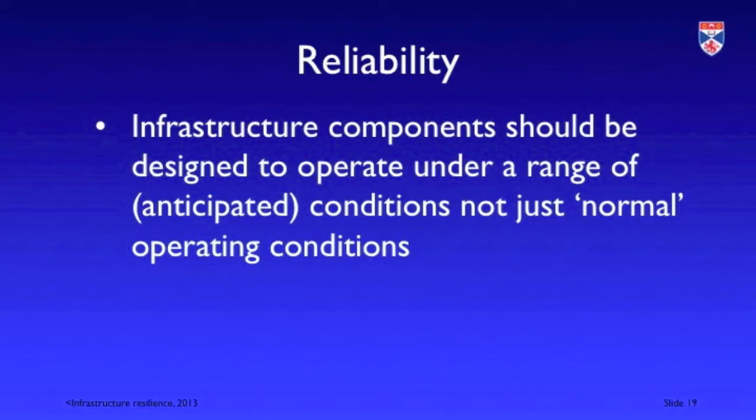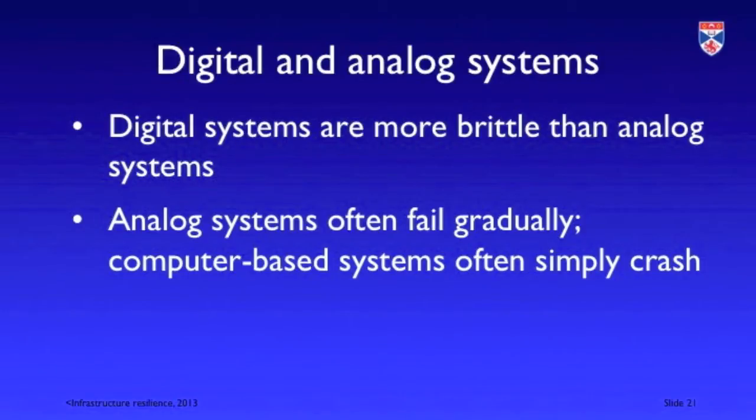Reliability is about building components that are able to work across a range of operating conditions — building hardened components that don't just work in particular circumstances, ensuring for example that components continue to work when weather is very cold or very hot. Reliability is also about ensuring systems can fail soft, meaning they don't have a catastrophic failure but instead fail slowly with a gradual reduction in service, giving people time to react. Analog components tend to have that gradual failure mode rather than the catastrophic crash we see with digital computers.